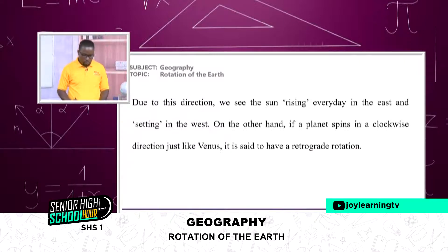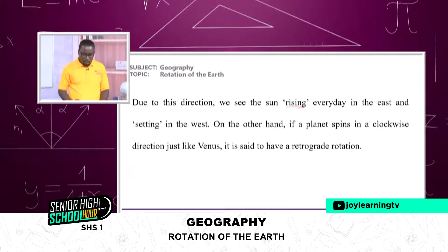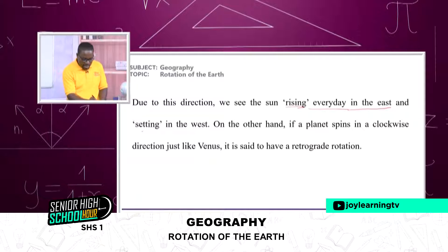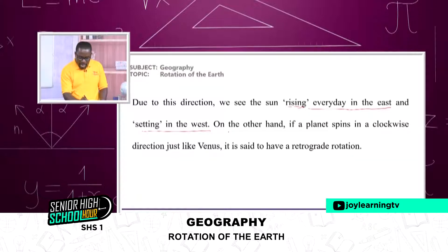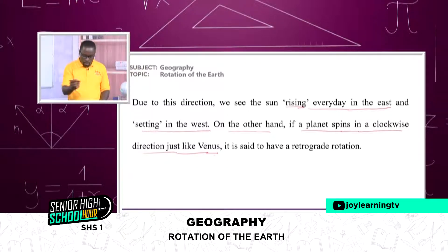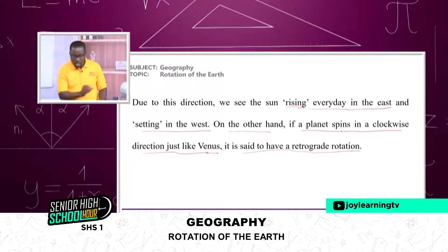Due to this direction, we see the sun rising every day in the east and setting in the west. On the other hand, if a planet spins in a clockwise direction—like Venus and Uranus—it is said to have a retrograde rotation.